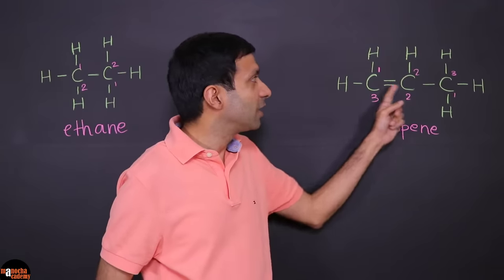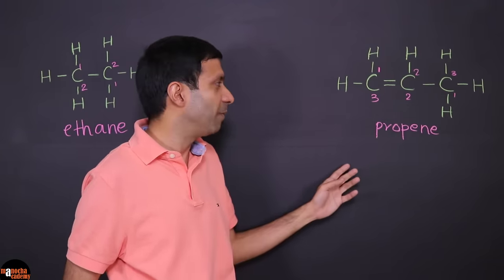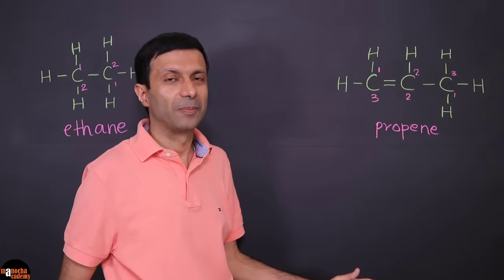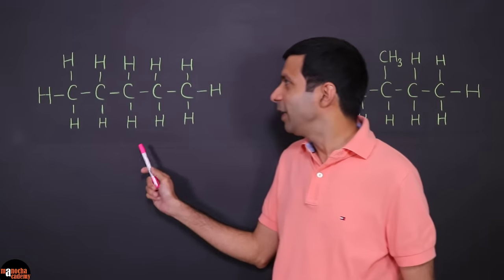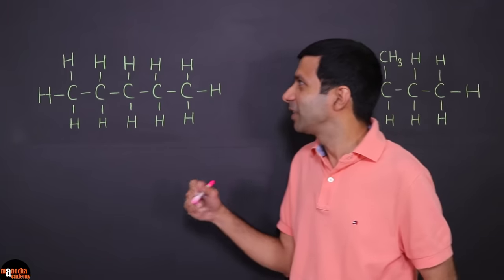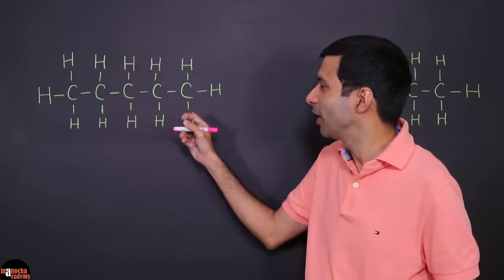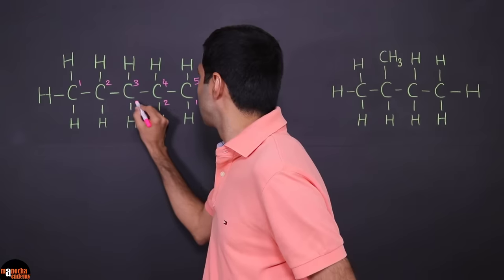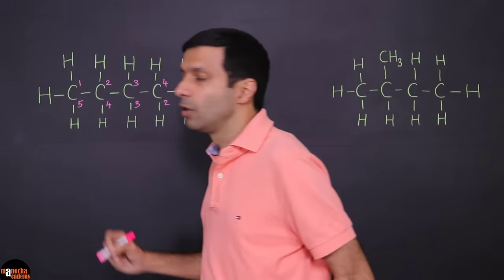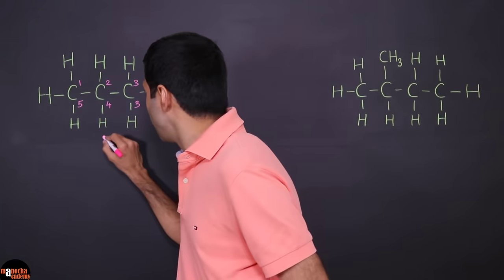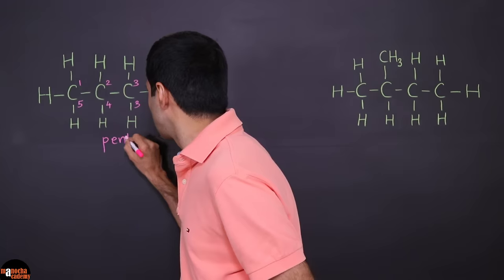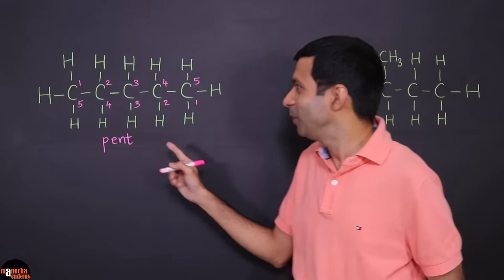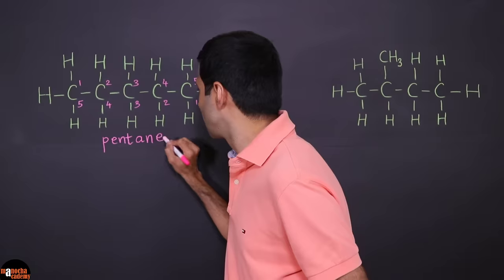So what we learned here: look at the longest continuous carbon chain, number it forward and backward, find the name based on the number of carbon atoms and also the type of bond. Let's take a look at this next example. Finding the longest continuous carbon chain gives us five carbons, so the name starts with pent, and since there are only single bonds between the carbon atoms it's an alkane — so the name is pentane.